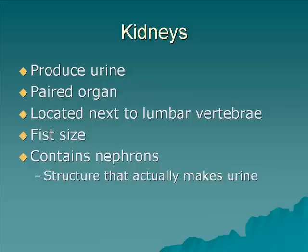One of the main structures of your urinary system is your kidneys. This is actually where your urine is produced — it's produced in little structures called nephrons. They're the actual structures that make the urine and they're located within the kidney. The root for kidney is 'nephro,' so that might help you remember nephron.